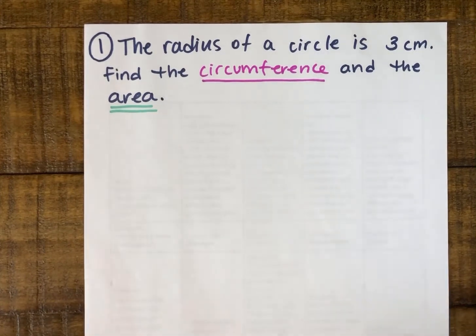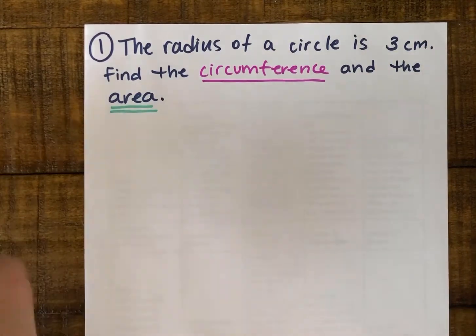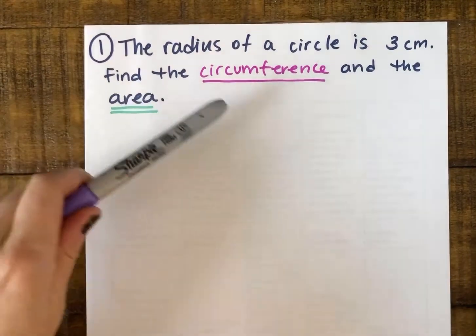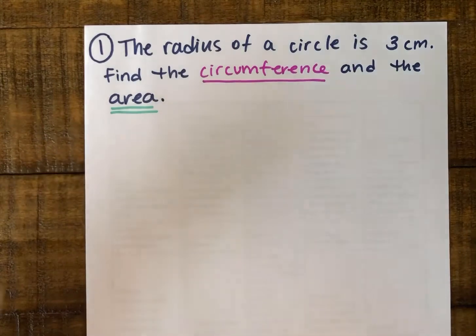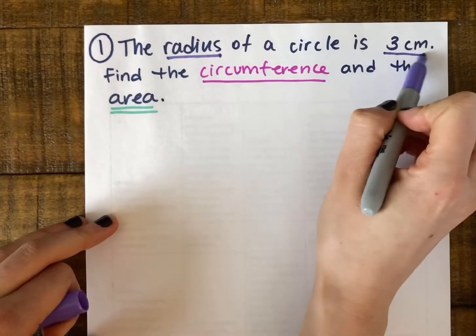As I read through this problem, I definitely want to get some important information down on my paper. I noticed that they want the circumference and the area, and that they give me the radius is 3.